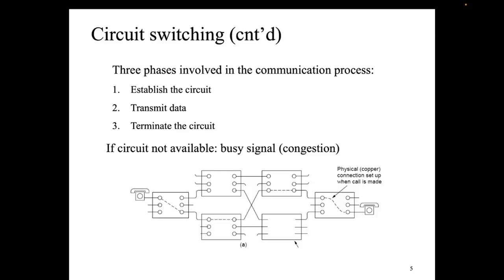Once the circuit is established, nobody else can access that particular circuit between you and your destination node — whoever you're trying to communicate with. Nobody can use that particular medium. It's kind of established just for you. It's only until that communication medium has been exhausted — the data flow is complete — that you can actually release that circuit back to somebody else. So after the data has been transmitted between the two users or two nodes, then there's a termination. The circuit gets terminated to make room for other users to access that particular circuit.